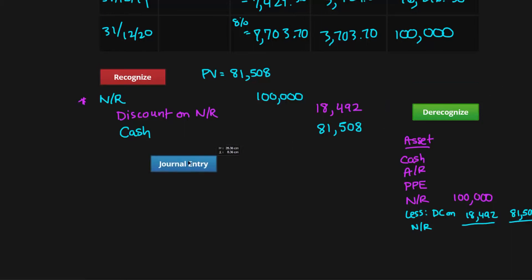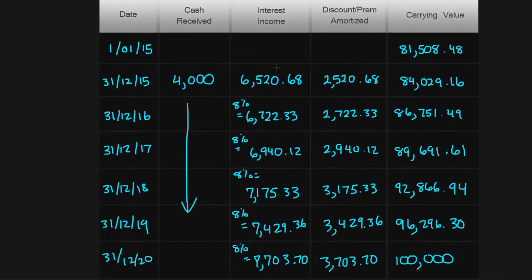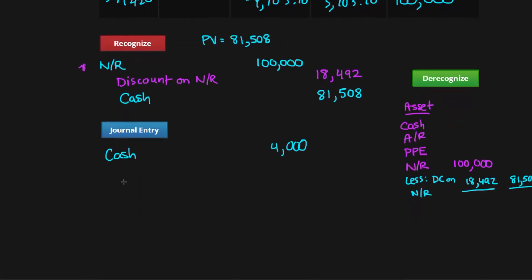Moving to the journal entry: we know that we received cash of four thousand dollars, and if we look at our amortization table we can see that the interest earned is six thousand five hundred and twenty. So we'll record interest income of six thousand five hundred and twenty.